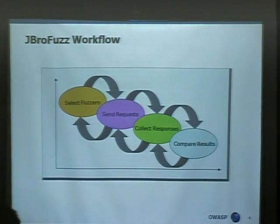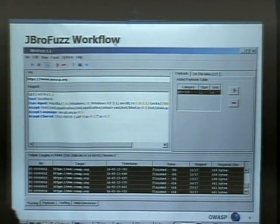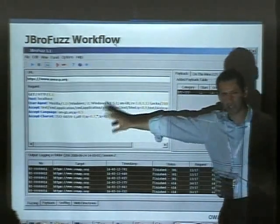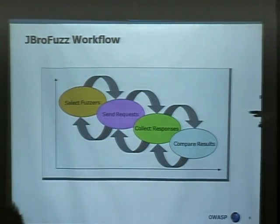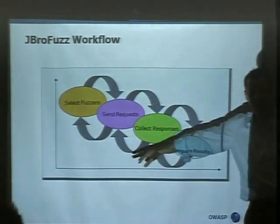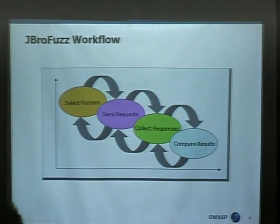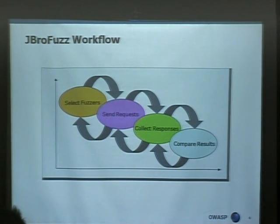In terms of the actual workflow, what we're doing is selecting the payloads that we want to go through. There are categories — we'll talk about this. We're selecting the fuzzers, sending the requests, collecting the responses, and this is typically the place where we spend all our time. That's an iterative process — we're revisiting the request and the responses, comparing the results. That's the basic concept 101 of fuzzing over any port, targeting a web service or web server.